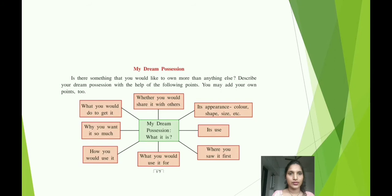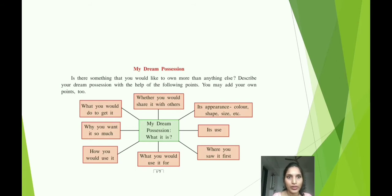Let us see the second activity: My Dream Position. Is there something that you would like to own more than anything else? Describe your dream possession with the help of the following points — whether you would share it with others, its appearance, color, shape, size, its use, where you saw it first, what you would use it for, how you would use it, why you want it so much, and what you would do to get it. You can also add your own points.